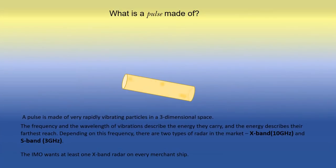A pulse is made of very rapidly vibrating particles in a three-dimensional cylindrical space. The frequency and the wavelength of vibrations describe the energy they carry, and energy describes the farthest outreach. There are two IMO approved frequency bands: S-band and X-band. The IMO requires at least one X-band radar on every merchant ship.